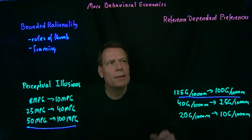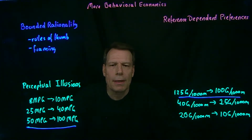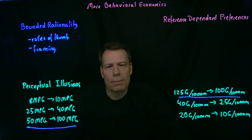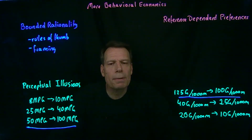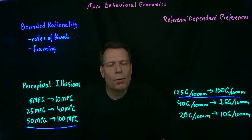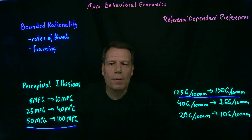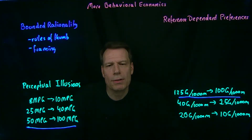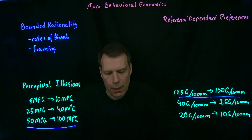Finally, let me talk about reference-dependent preferences. Typically in economics, we assume that the way we value something is to simply look at it and say, how much is that worth to me — what would I be willing to pay for it? But psychologists tell us that sometimes we value things with reference to what we call a reference point. Let me give you another example from Duke professor Dan Ariely, who conducted the following study.